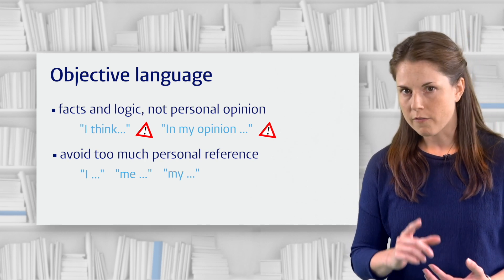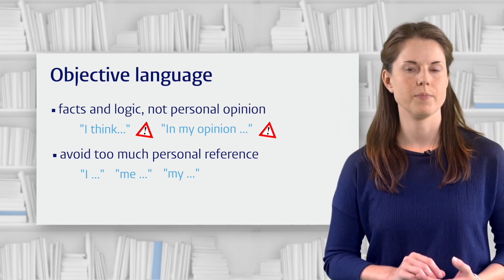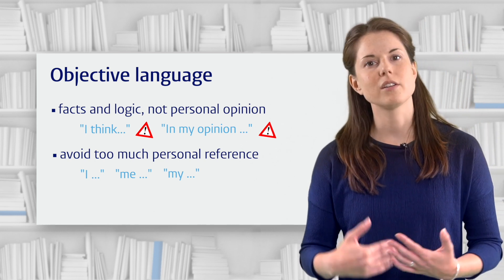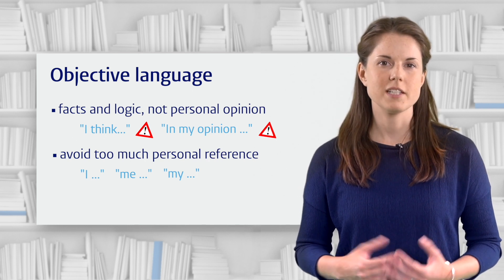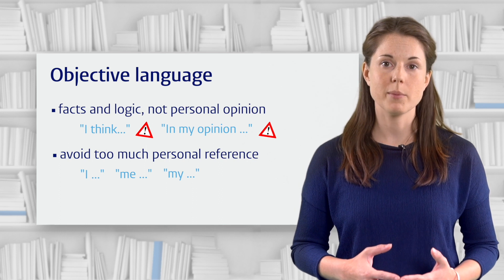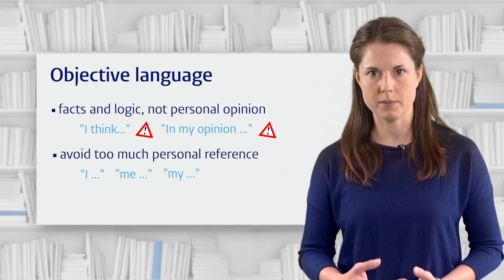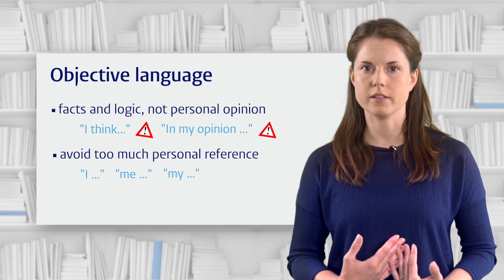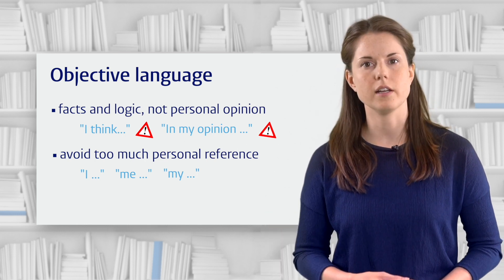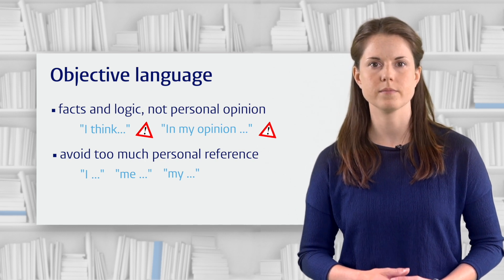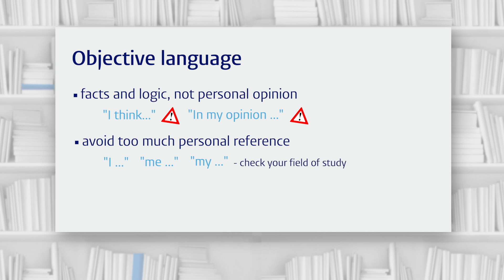Notice that I'm saying you should avoid referring to yourself too much — I'm not saying never ever do it. Because in some cases it is useful. In particular, if your work involves collecting primary data by yourself or as part of a team, you might use phrases like 'I conducted a survey' or 'we gathered data' in describing how you or you and your colleagues did that. Different fields of study also differ in how much writers tend to refer to themselves. If you're in doubt, take a close look at some articles from your field of study — do the authors refer to themselves in the text? If so, in what contexts? Try to follow their example.